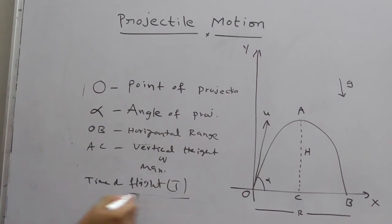Time of flight T. The total time taken by the particle in describing the path OAB is called the time of flight. It is represented by capital T. What is the formula for capital T and other useful derivations of projectile motion?